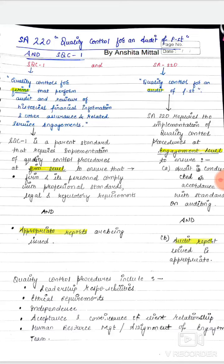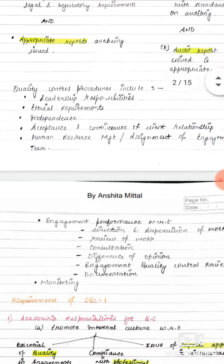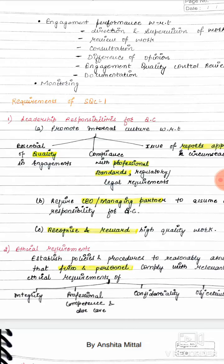These are quite common points found in both standards. Now if I talk about the requirements of SQC1, the first requirement is leadership responsibilities for quality control. The first question that comes to mind is: who bears responsibility? The ultimate responsibility to ensure quality control rests with the CEO or the managing partner of that particular firm on which SQC1 applies.